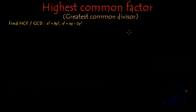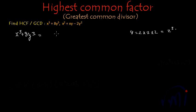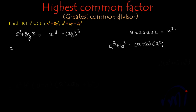Let's see — 8 can be written as 2 cube, since factors of 8 are 2 multiplied by 2 multiplied by 2. So the first expression, x cube plus 8y cube, can be written as x cube plus 2y whole cube. Using the identity: factors of a cube plus b cube are a plus b, multiplied by a square minus ab plus b square. So the factors of x cube plus 2y whole cube will be x plus 2y multiplied by...